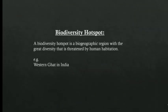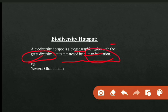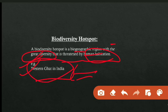Next is biodiversity hotspot. A biodiversity hotspot is a biogeographic region with great diversity that is threatened by human habitation. For example, the Western Ghats in India is one of the biodiversity hotspots in the world.